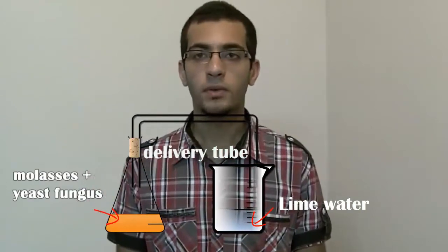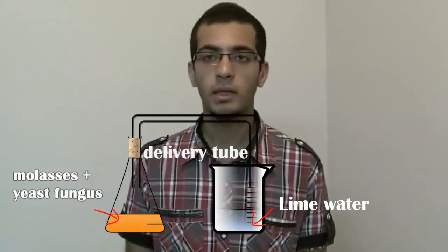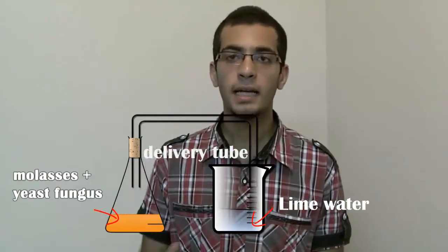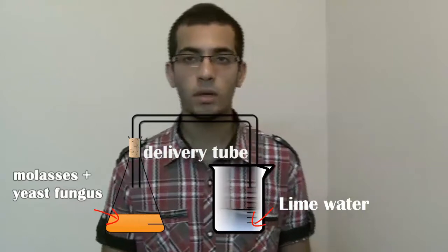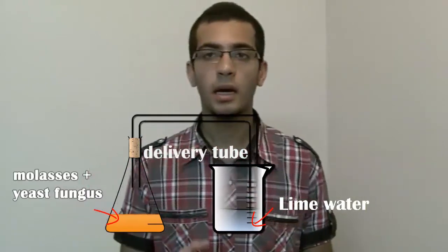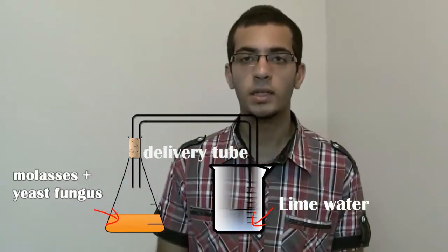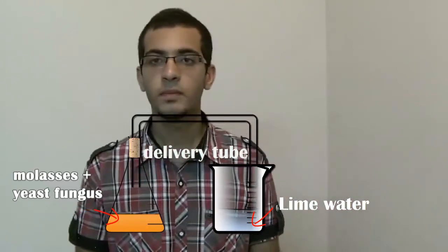We will leave this apparatus for several hours in order to let the yeast carry out anaerobic respiration. As an observation, we will notice that the lime water will become turbid or milky. This indicates the evolution of carbon dioxide from the process of anaerobic respiration, and by this experiment we have proved that alcoholic fermentation produces carbon dioxide.